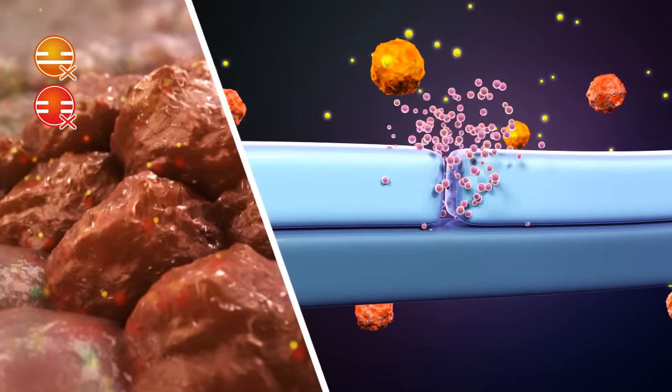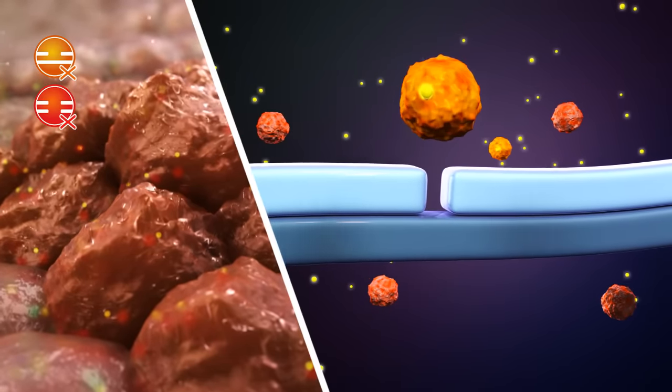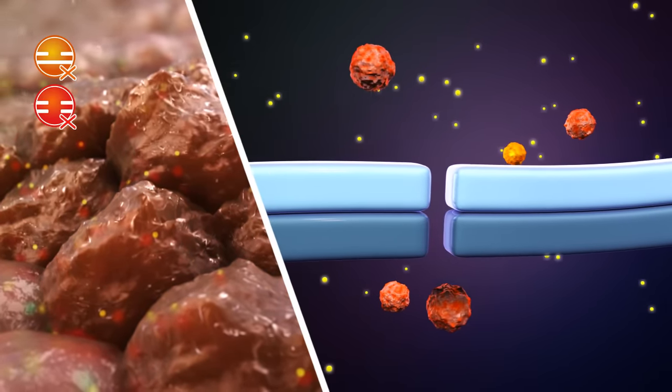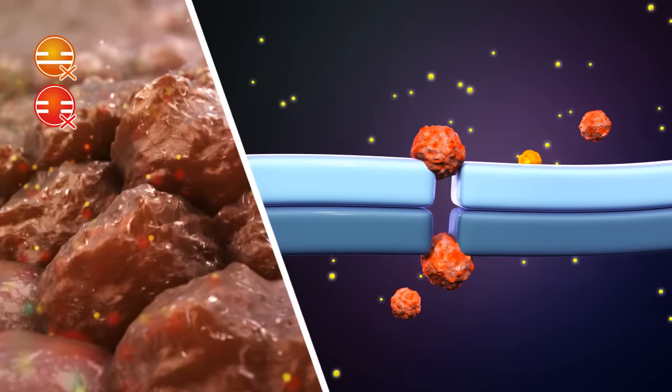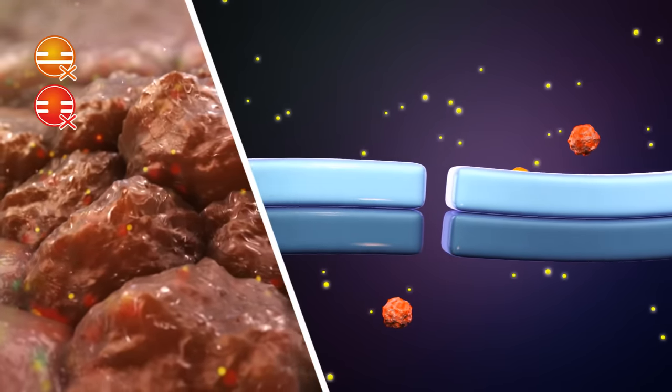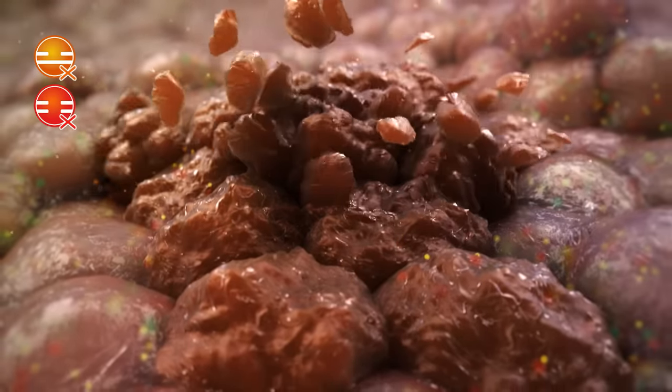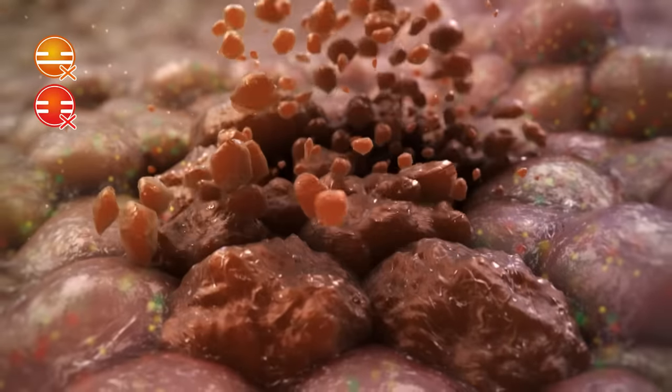When a single strand break arises in the DNA of the tumour cell, it can no longer be repaired. The persisting single strand break can transform into a double strand break. Because of the hereditary defect in the tumour cells, the BRCA1 protein cannot repair this damage, causing the tumour cells to die.